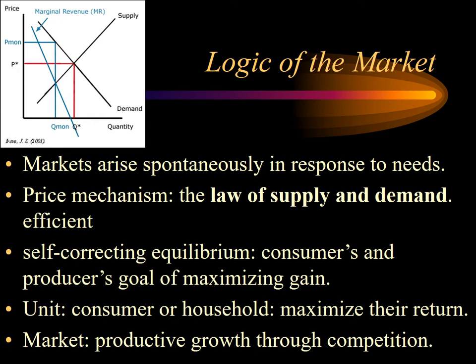The law of supply and demand argues that a self-correcting equilibrium of cost will be arrived at based on the consumers' and producers' goal of maximizing gain. In the process of supply and demand, consumers and producers are sensitive to prices, and so adjust their terms of exchange accordingly.